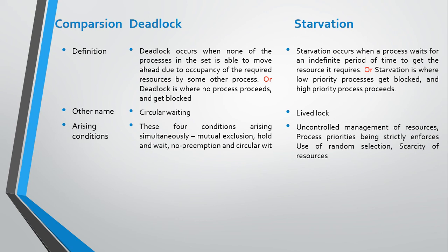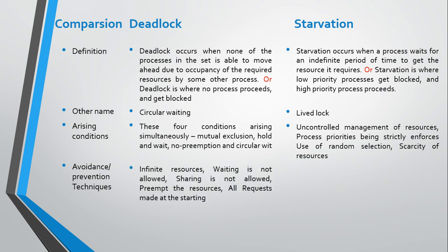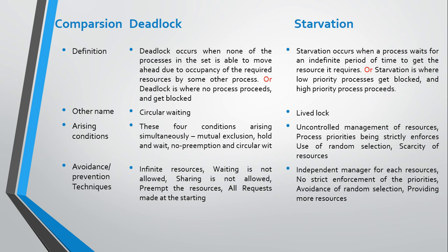Starvation arises due to uncontrolled management of resources, process priority being strictly enforced, use of random selection, and scarcity of resources. Avoidance and prevention technique: in deadlock, finite resources, waiting is not allowed, sharing is not allowed, preemption of resources. All requests made at the starting. In starvation: independent manager for each resource, no strict enforcement of priority, evidence of random selection.